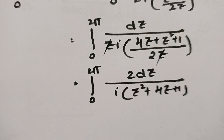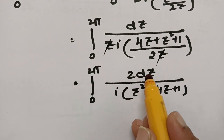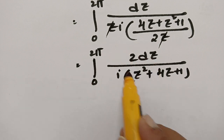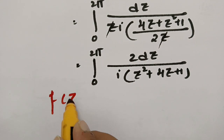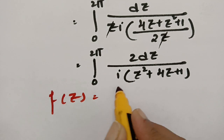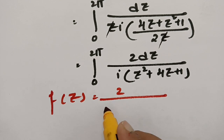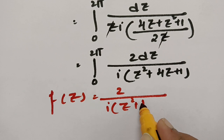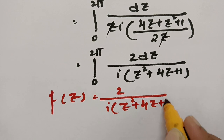So our f(z) is identified as: f(z) = 2 / [i · (z² + 4z + 1)].